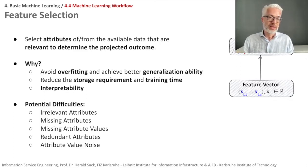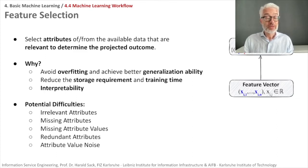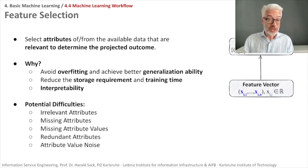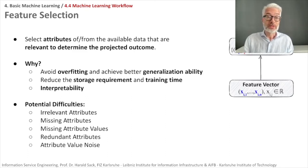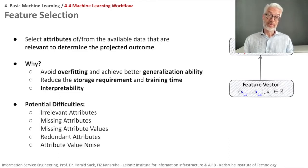There are several difficulties with features: we might have irrelevant features — those which are simply unnecessary. There are missing attributes — a feature I would need but don't have available. Sometimes a feature is present but some of its values are missing — those are missing attribute values. There may also be redundant attributes, which are those that become irrelevant in the presence of others, and of course there is noise within your attributes.